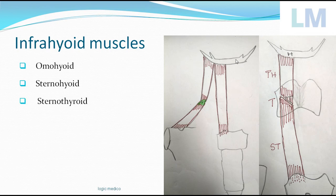If you miss the direct flight from sternum to hyoid, you take one flight sternum to thyroid — land there for a moment — then from thyroid to hyoid: thyrohyoid. And sternothyroid. These four are called the infrahyoid muscles.